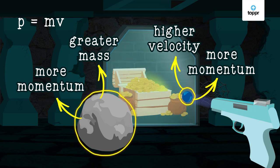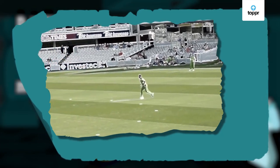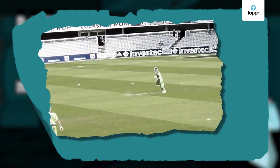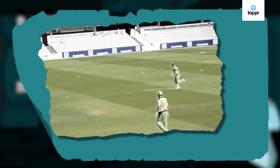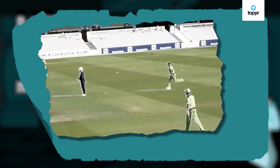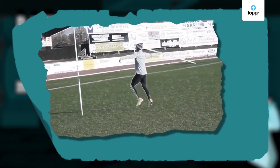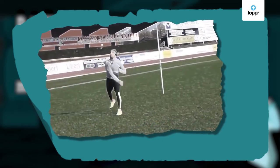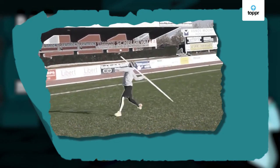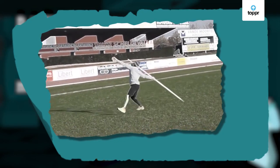We can use momentum to understand a lot of other things. For instance, ever wondered why a fast bowler takes such a long run up when he bowls? Long run ups help him gain velocity. What he's basically trying to do is gain momentum. This momentum helps him bowl faster. This same technique is used in many other sports like the javelin throw. The athletes take a run up to gain momentum and this helps them throw the javelin as far away as they can.